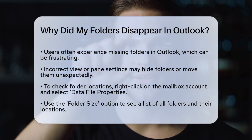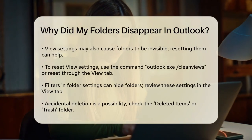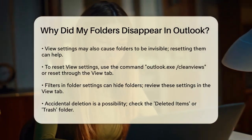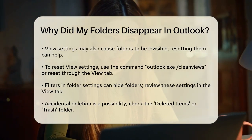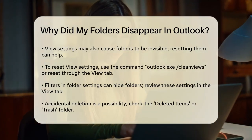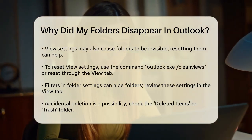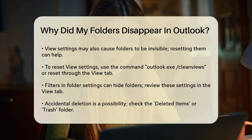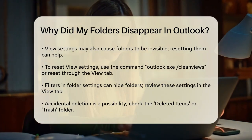Another common issue is with the view settings. If the view settings are incorrect, some folders might not be visible. To reset the view settings, close Outlook, press the Windows R keys, type Outlook.exe /cleanviews, and click OK. Alternatively, go to the View tab in Outlook, click Reset View in the Current View section, and confirm if prompted.